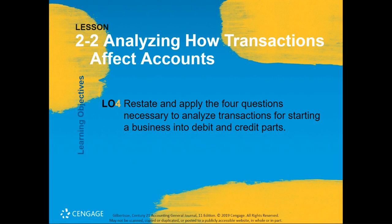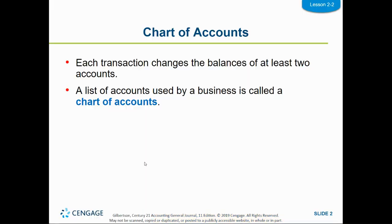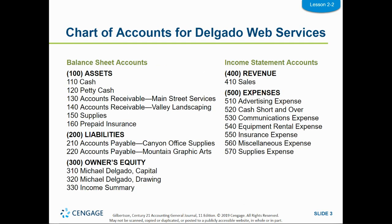In lesson 2.2 we're going to learn how to analyze transactions and how they affect accounts. Each transaction is going to change at least two accounts. When we talk about accounts, I want to talk a little bit about the chart of accounts. The chart of accounts is a list of accounts that a business uses. This is the chart of accounts for Delgado Web Services, which is the practice business we'll be using throughout the first part of the book, through chapter eight. Right now we are not looking at income statement accounts — we're looking just at assets, liabilities, and owner's equity.